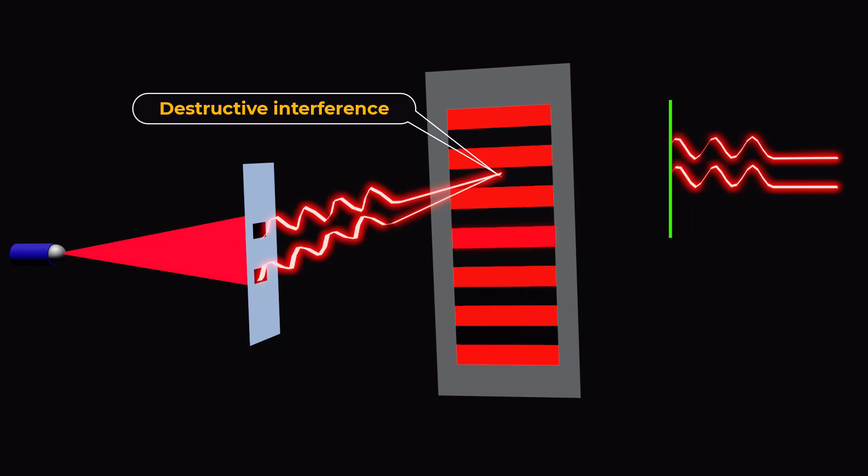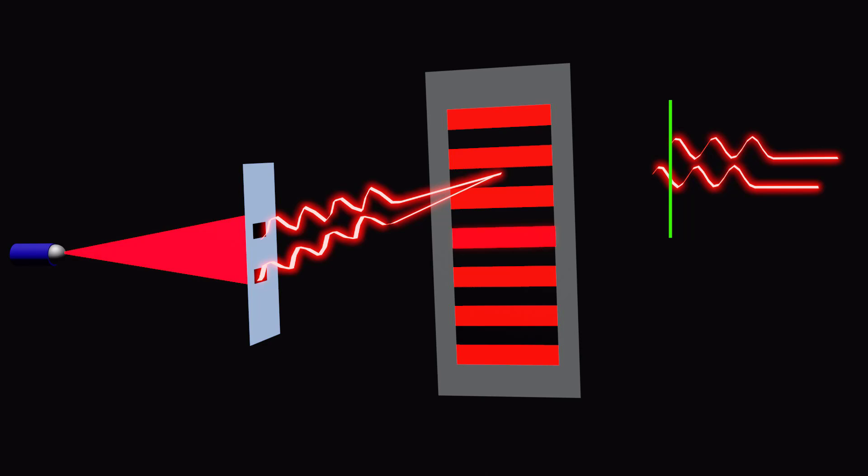For destructive interference to occur, the waves from the two slits must be out of phase by 180 degrees. This means that the crests of the waves must meet the troughs of the other waves. This can happen when the path difference between the waves is equal to an odd multiple of half wavelength.